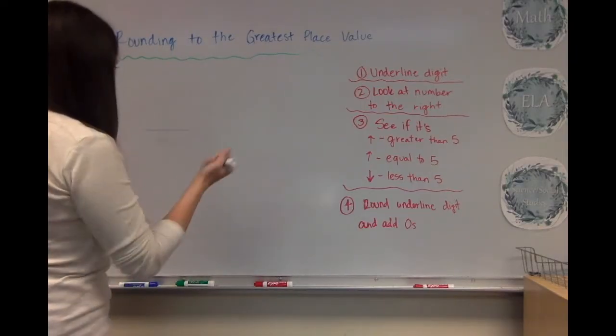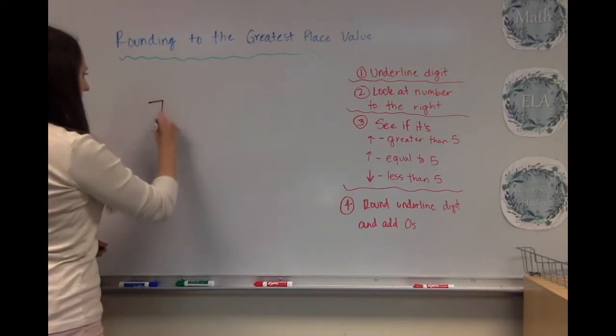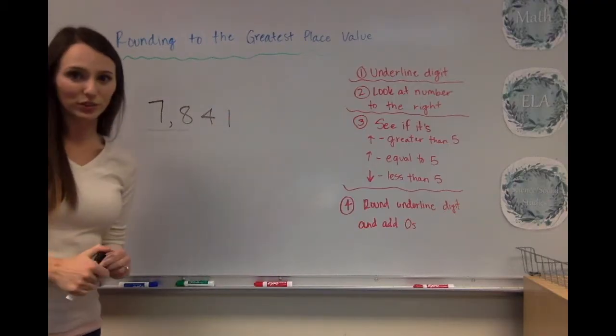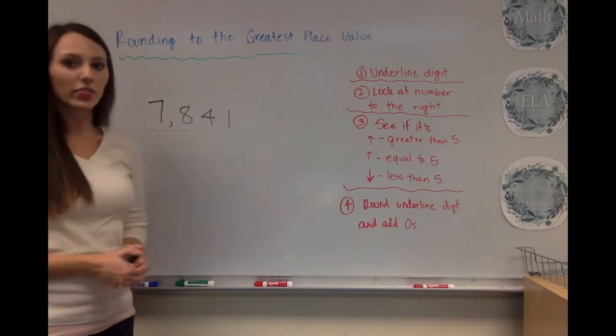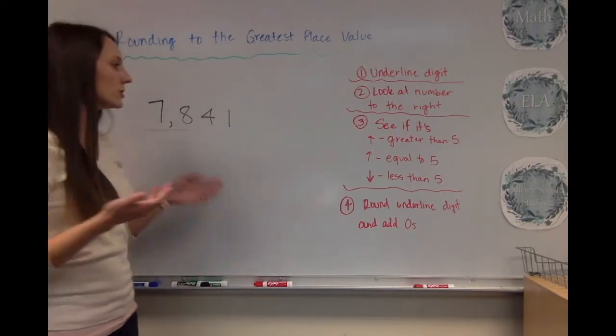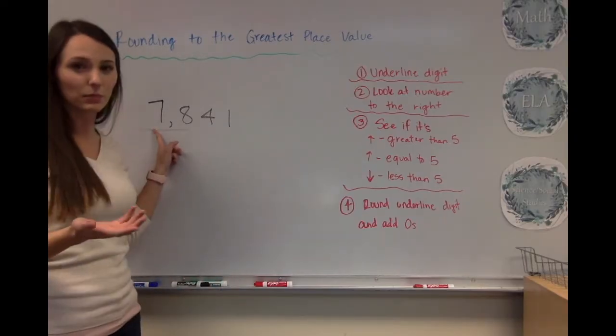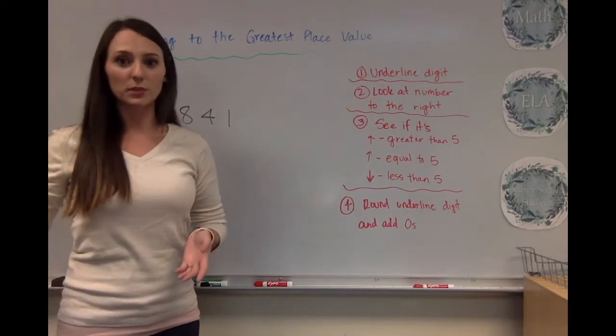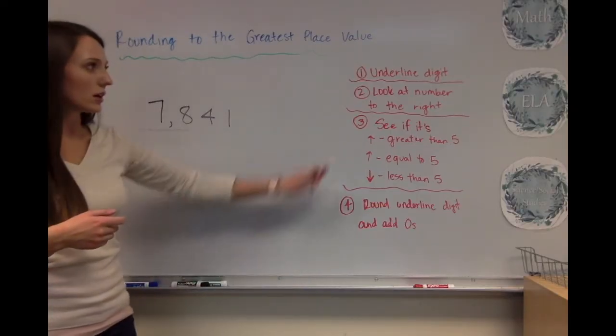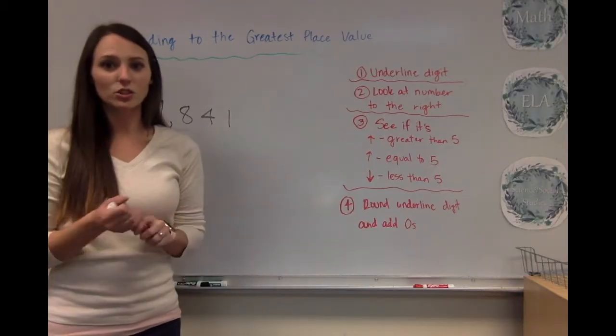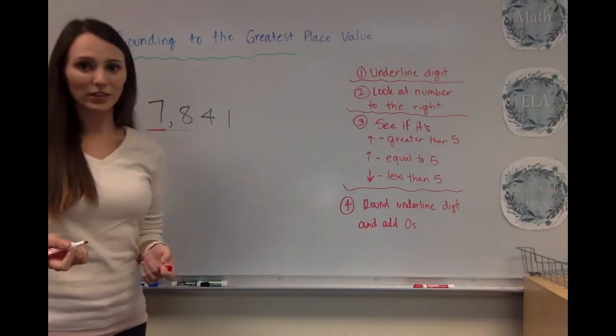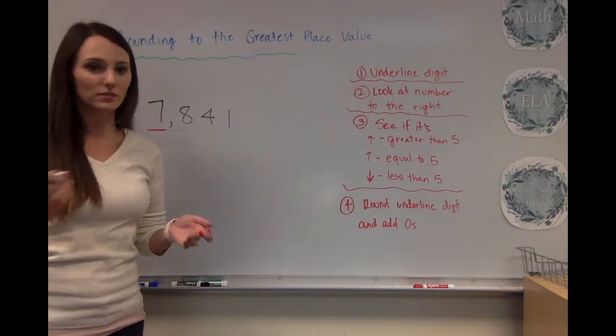So let's say I have this number, 7,841. Okay, so we're going to look at the first step. And first, this whole lesson focuses on rounding to the greatest place value. So we're always going to do the number or the digit that's in the biggest place. We will have a future video on rounding to specific place values, but for this time, it's just going to be the greatest place value. So we're going to focus on the underlined digit. We're going to underline the digit that we need to round. So that's going to be 7. That's our greatest place value in this number. You can see that 7 is in the thousands place.